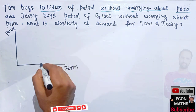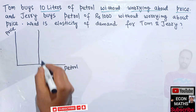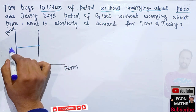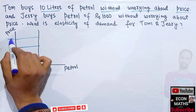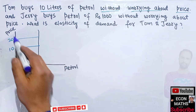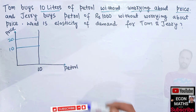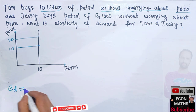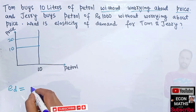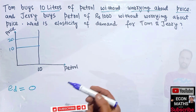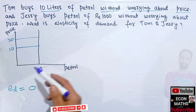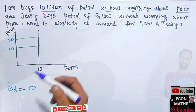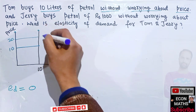If Tom is buying 10 liters of petrol and is not concerned about any change in price — whether price is 10 or 20 — he buys the same amount. In this case, we can say the elasticity of demand for Tom is equal to zero. Any change in the price of petrol will not change his requirement of 10 liters.